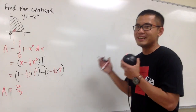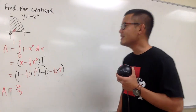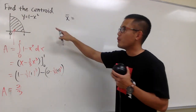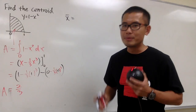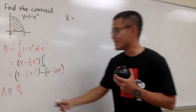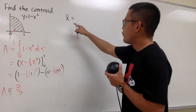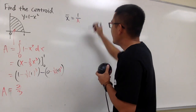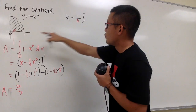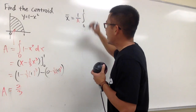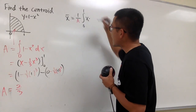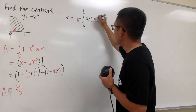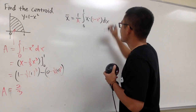And now here is the main dish — this was just the appetizer. Okay, x-bar: this is the x-coordinate for the centroid of this region. We have to remember the formula, and don't forget about the area. For x-bar, we must have 1 over A, and then we integrate from 0 to 1, doing x times whatever this curve is — so x times the function, which is 1 minus x squared.